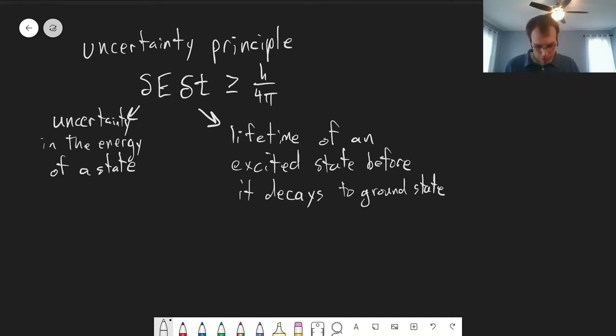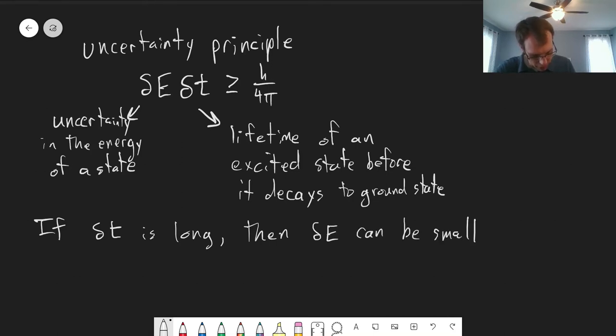So if delta T, if the lifetime is long, then delta E can be quite small. But the shorter the lifetime is for an excited state, the bigger the uncertainty of the energy. So if you have excited states that are very, very short-lived, they have very broad line widths in terms of what you observe.